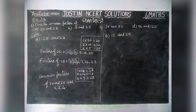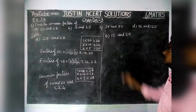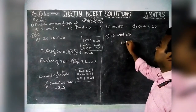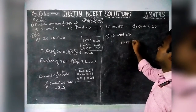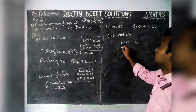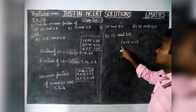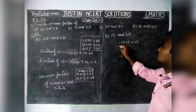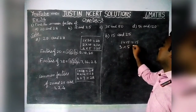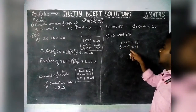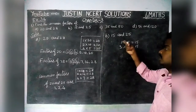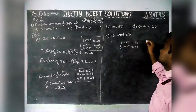First we will find all the factors of 15. 1×15 is 15, 2 will not come, 3×5 is 15, 5×3 is 15, 15×1 is 15. That's all.